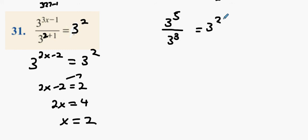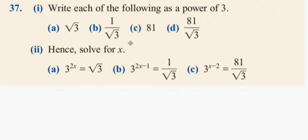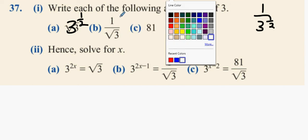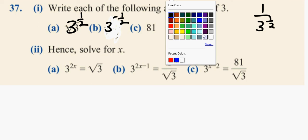All right guys, now 37, tough question. All right, what's root three, lads? Three to the power of a half. What's one over root three? One over three to the power of a half, which is three to the power of minus a half. 81 is three to the power of four.